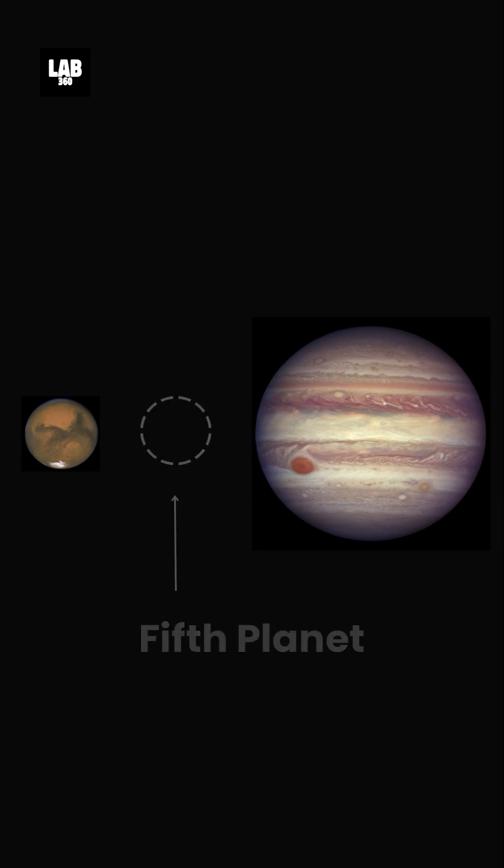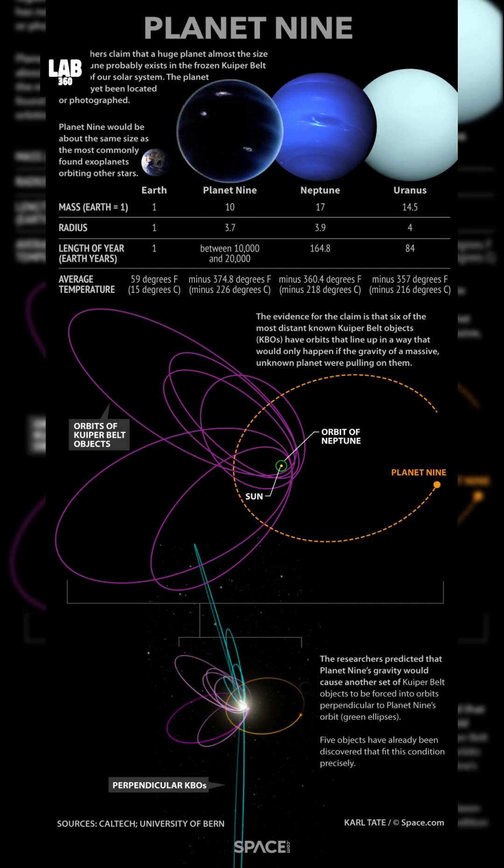Some studies propose a fifth terrestrial planet between Mars and Jupiter, later destroyed or ejected. They also found odd orbital patterns hint at a lost super-Earth that was kicked out by Neptune.